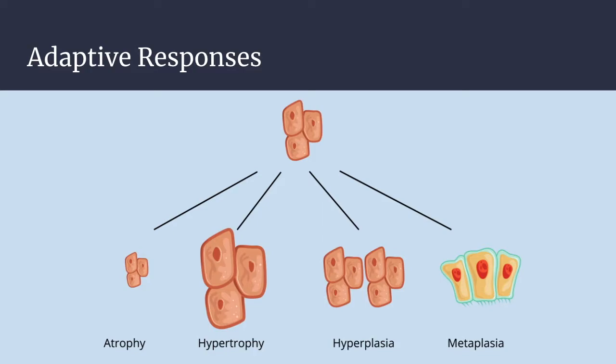First, hypertrophy. This is an increase in the size of cells, which typically increases the size of the organ those cells are in, and also increases the functional activity of the organ. This creates bigger cells but not new cells, because these cells are typically not capable of dividing. The increase in size comes from the creation and assembly of new intracellular components, specifically protein. Hypertrophy often occurs alongside hyperplasia — both involve an increase, but hypertrophy is an increase in size.